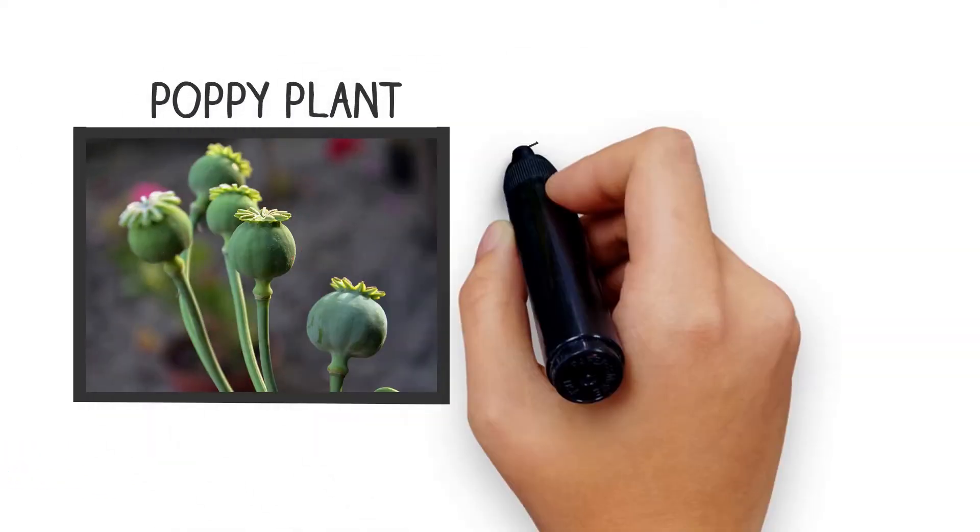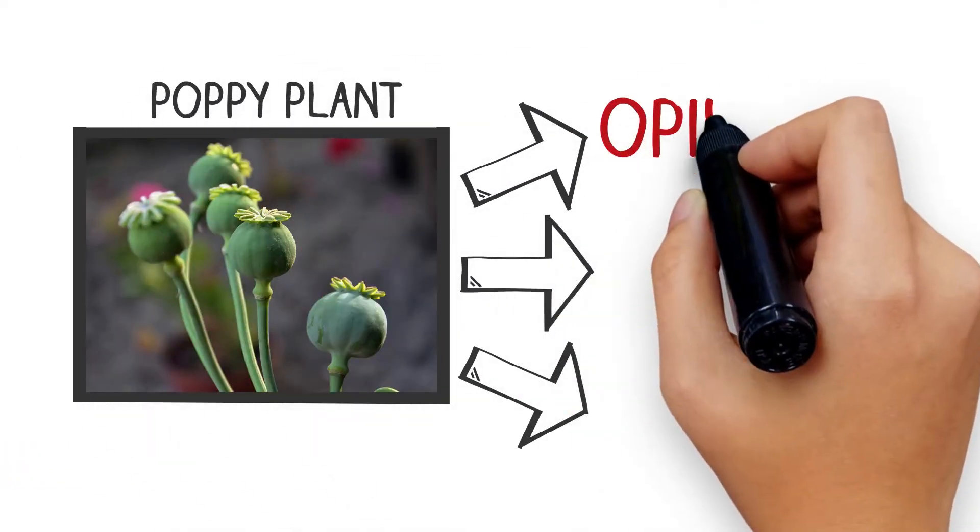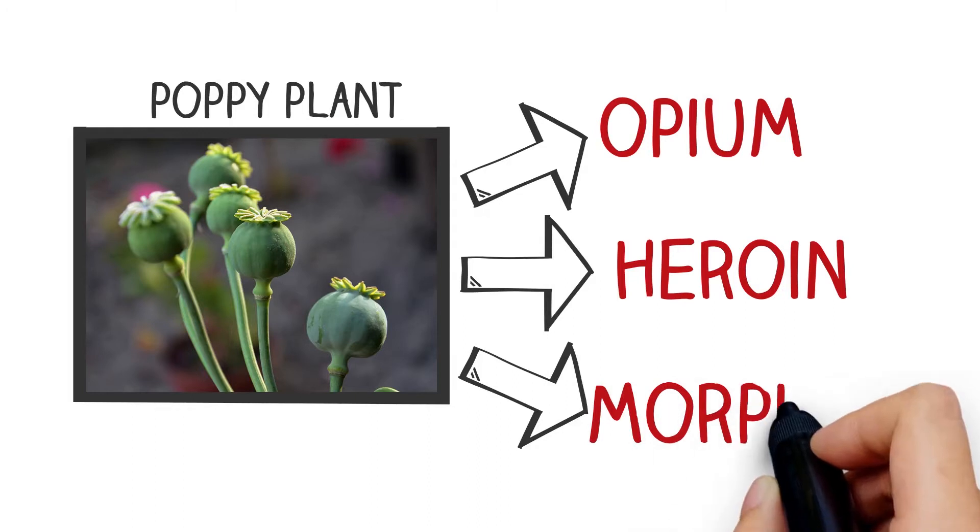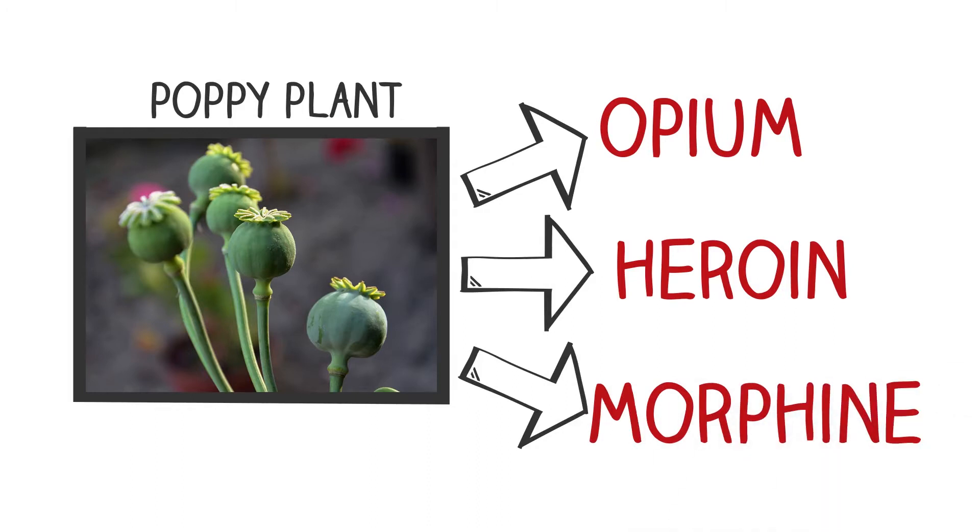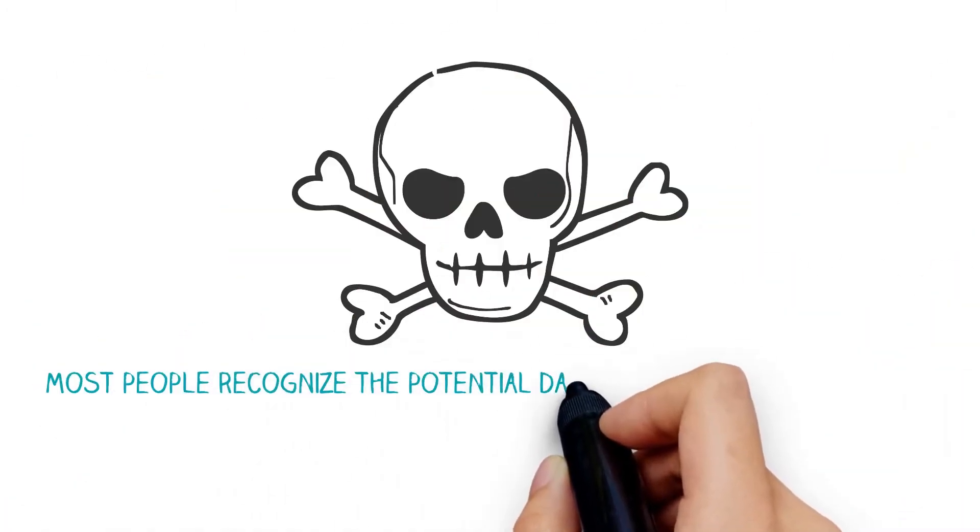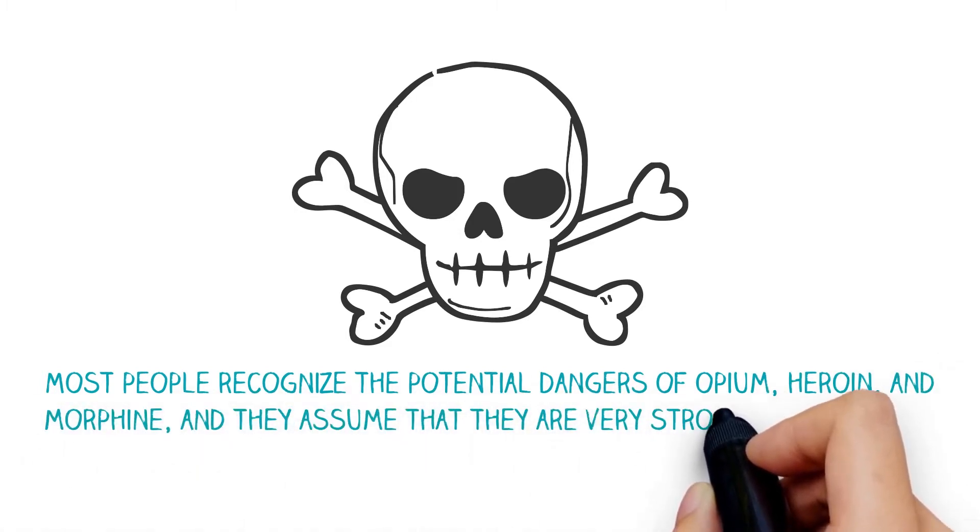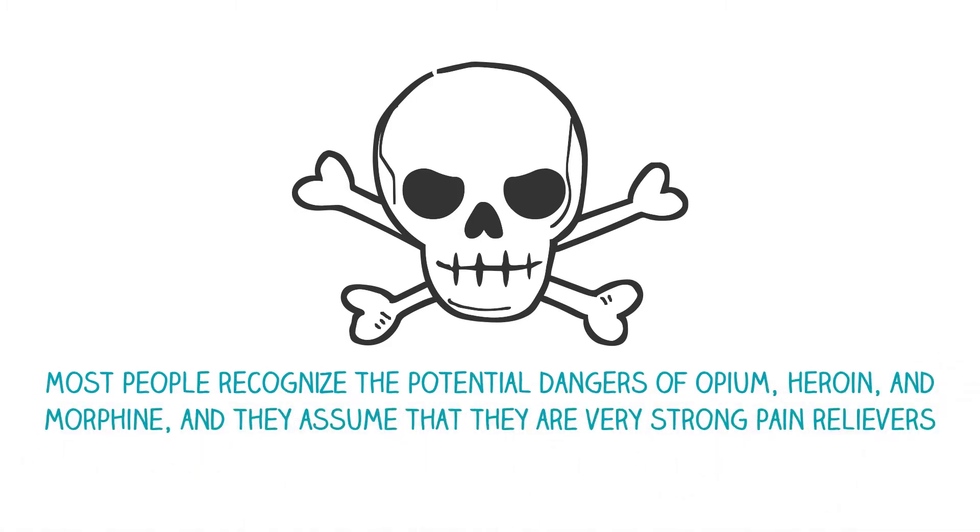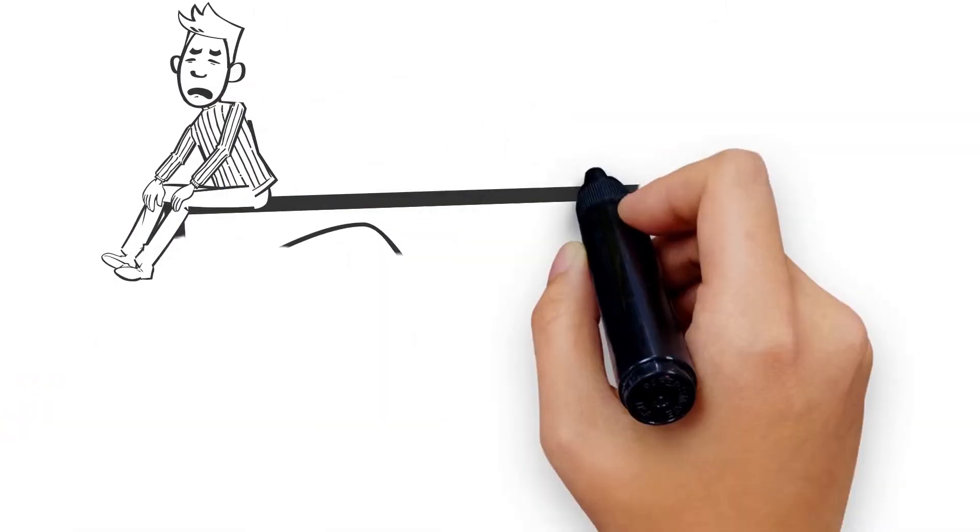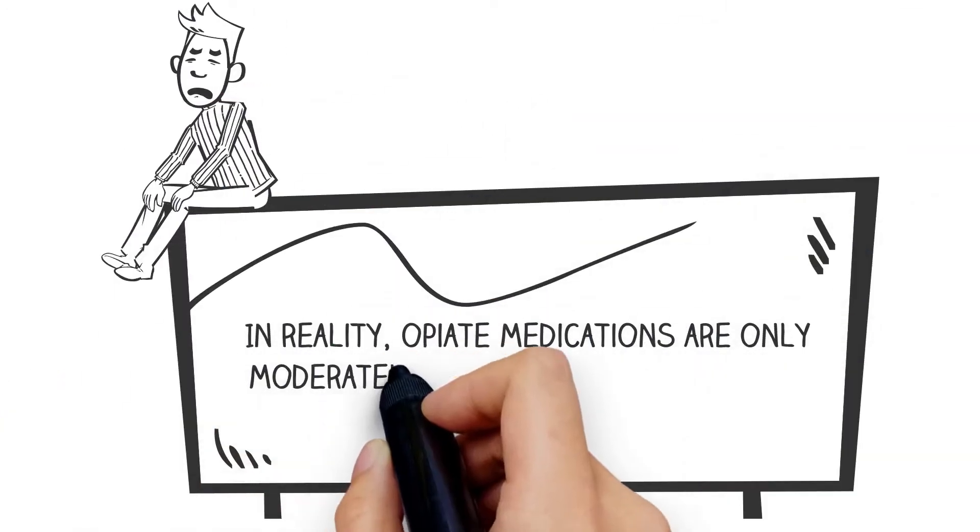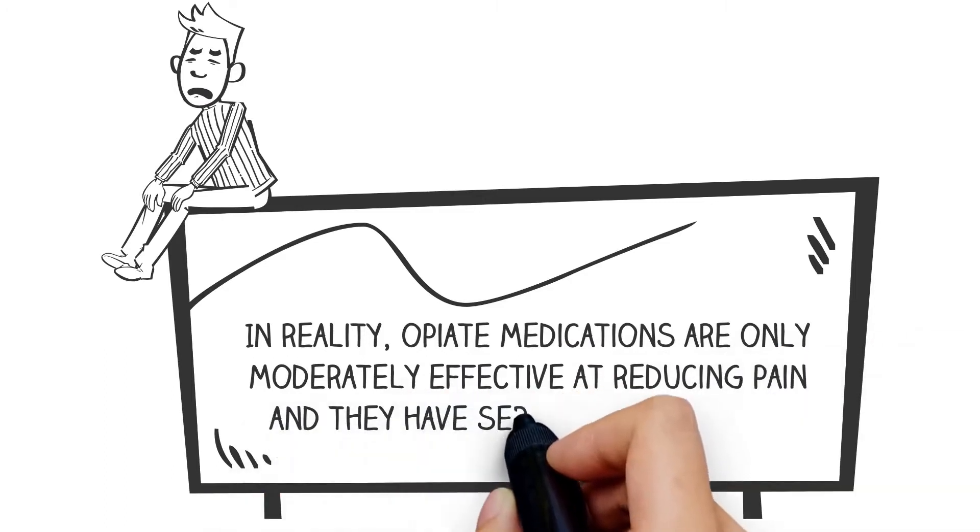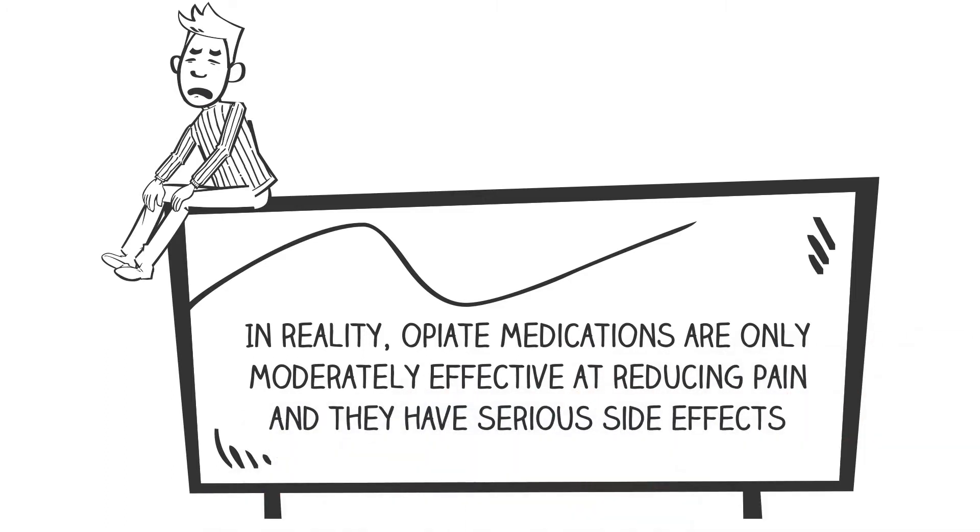Opiates are derived from the poppy plant, and they have been around for thousands of years as opium, heroin, and morphine. Most people recognize the potential dangers of opium, heroin, and morphine, and they assume that they are very strong pain relievers. In reality, opiate medications are only moderately effective at reducing pain, and they have serious side effects.